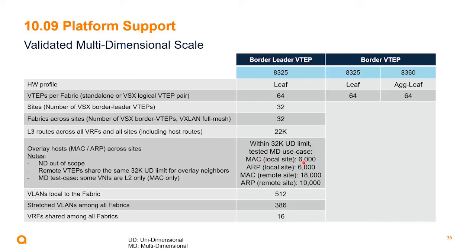Validation was done with mixed L2 and L3 VNIs. The scale includes 6,000 local MAC addresses, 6,000 local ARP entries, 18,000 remote MAC addresses, and 10,000 remote ARP entries. The total number of VLANs local to one fabric was 512, with up to 386 stretched VLANs extended across all fabrics, and up to 16 VRFs across all fabrics. This summarizes the validated solution for the first release of 10.09.